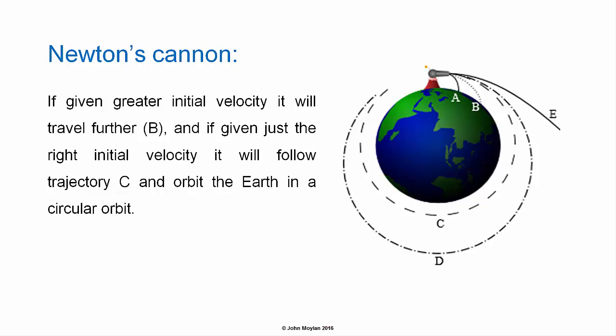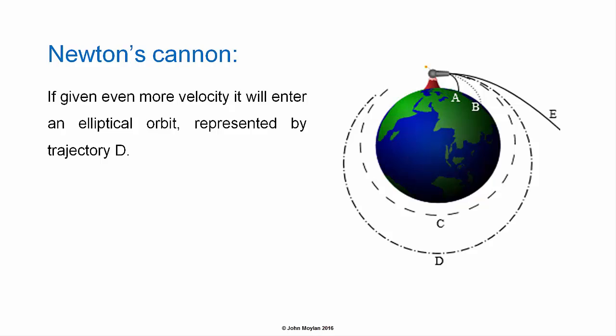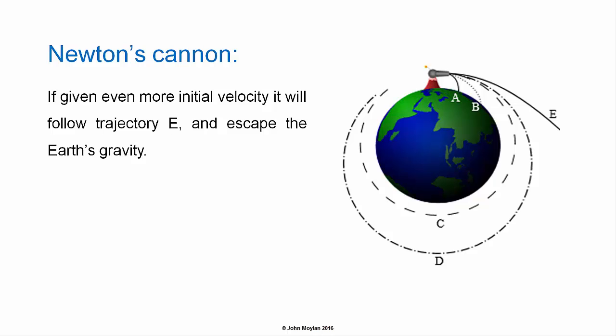If the projectile is given just the right amount of velocity, it will follow trajectory C. It will fall towards the earth at the same rate as the curvature of the earth, and therefore circle the earth at the same altitude. If given even more velocity, it would enter an elliptical orbit, represented by trajectory D, and further velocity still would mean that it had enough velocity to escape the earth's gravity, and would follow the trajectory marked E.